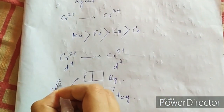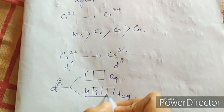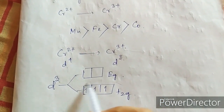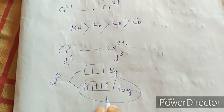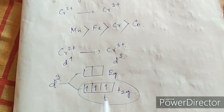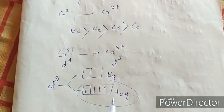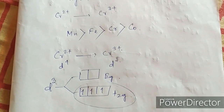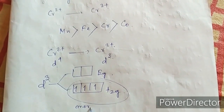When it is a D3 electron configuration, 3 electrons will go into the T2G subshells. You can see that T2G is half-filled. This configuration is more stable than the iron condition in aqueous solution.